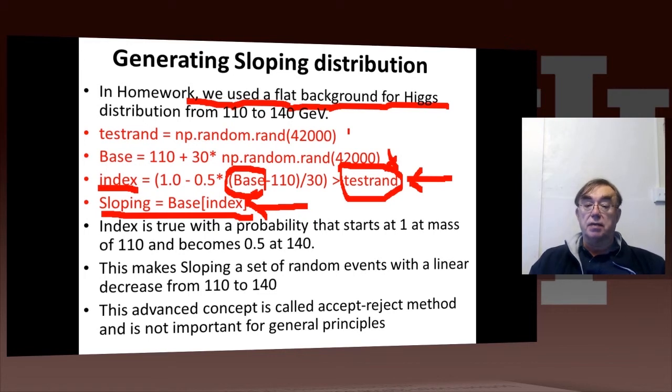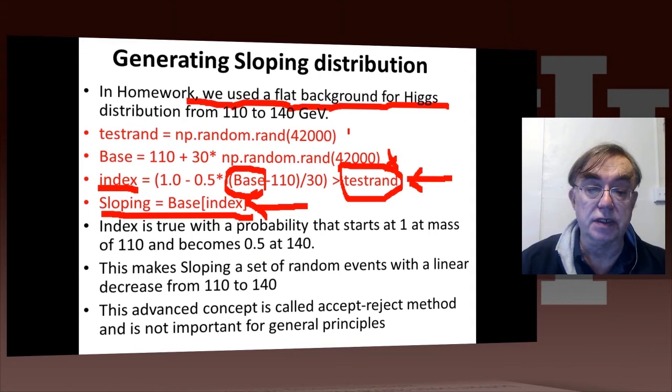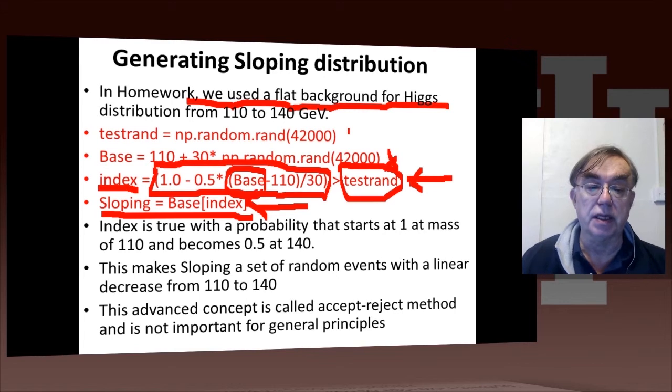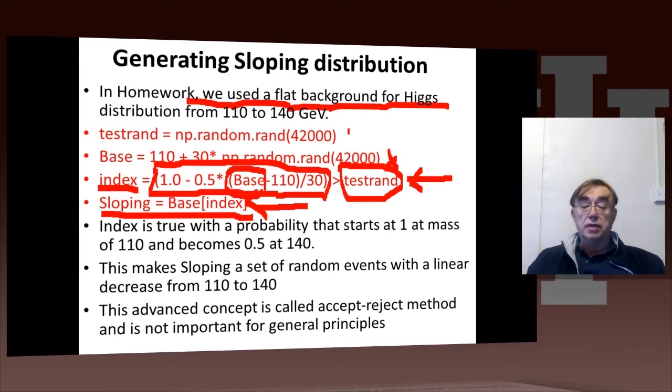It has to be bigger than a random number. The random numbers will be 0 and 1. So you can see that this inequality will be satisfied with a probability, because this function here is between 0 and 1. So this will be satisfied with a probability, which is just given by this function. So that says that we're